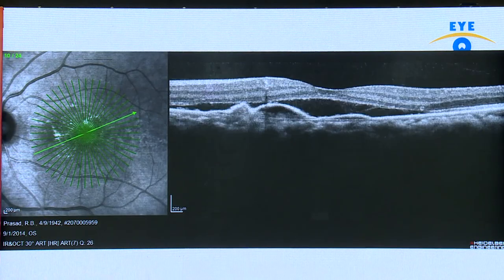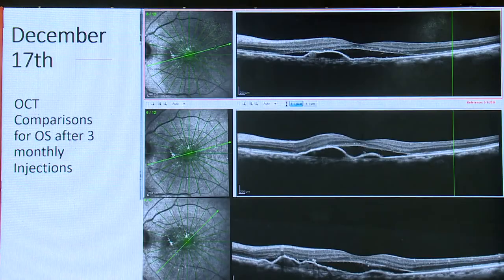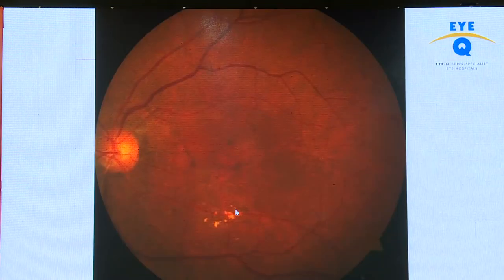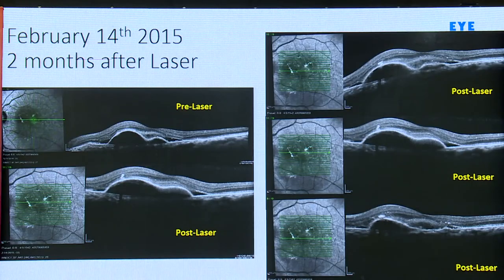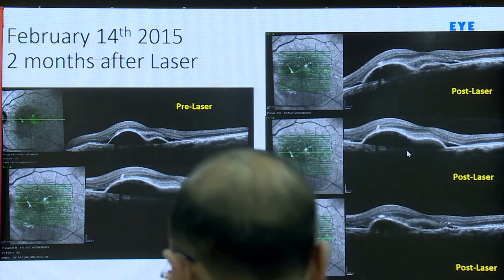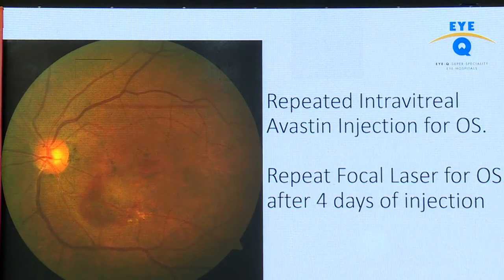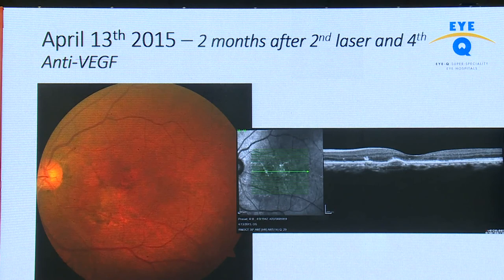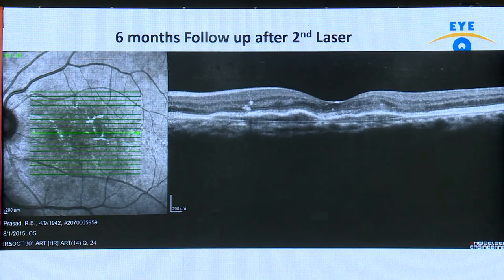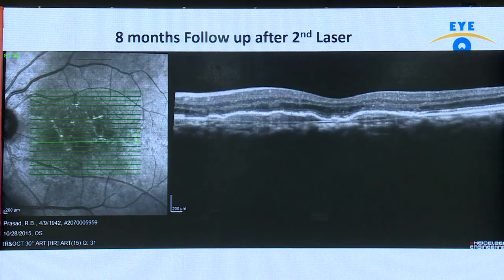Another patient with type 1 CNVM treated elsewhere with many injections without improvement was found to have an extra-macular polyp. First laser attempt produced no response — the OCT scans were almost the same pre and post. On repeat with higher power burns, hemorrhage occurred. Hemorrhage is a good endpoint when treating atypical lesions like angiomas, polyps, and tumors — it tells you the laser has been adequately delivered. The patient is doing well after almost two years of follow-up.